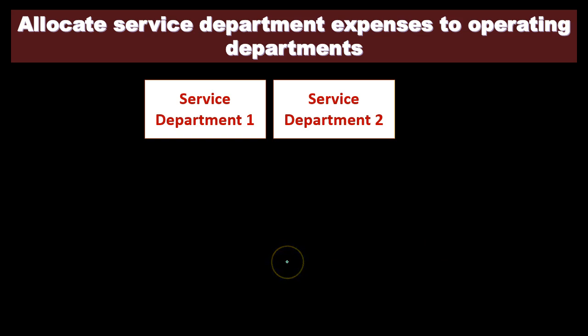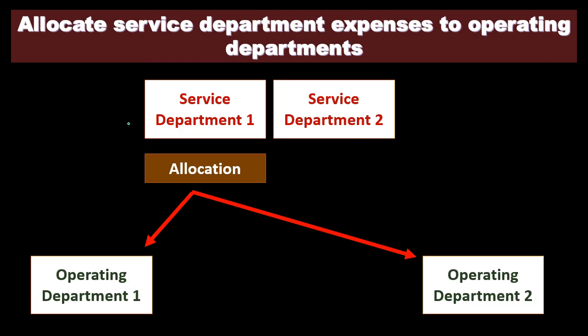The next step is to allocate the service department expenses to the operating departments. Remember, these service departments don't generate revenue, and the goal of the company is revenue generation. These are necessary departments, but they're just managing costs. Ultimately, we want to take the costs of those service departments and allocate them to the operating departments — the revenue-generating departments. Once we've allocated all proper costs to the service departments, we take that total and allocate it to the operating departments.